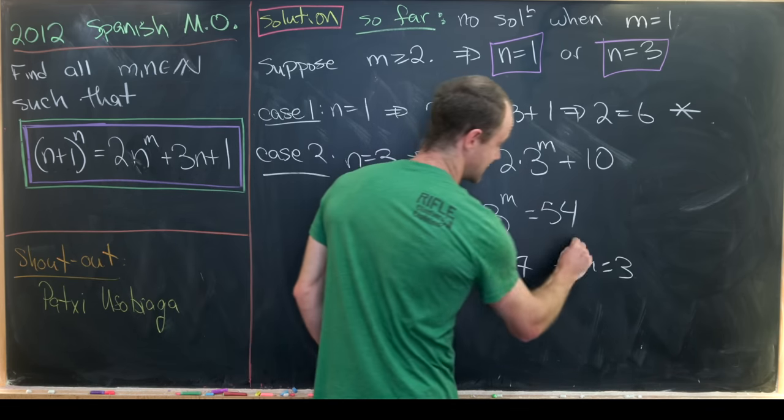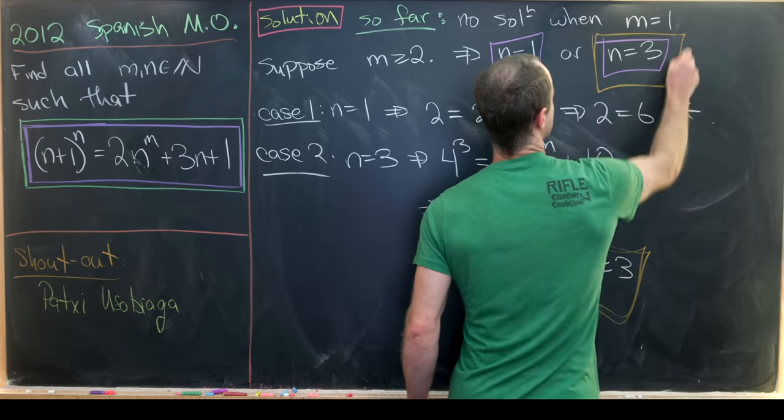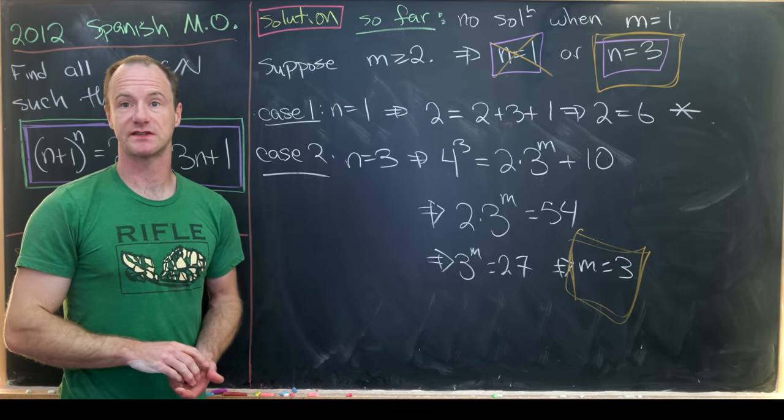And that does it. That's the only solution left to check. And that's the one that works. We have n equals 3 and m equals 3. And that's a good place to stop.